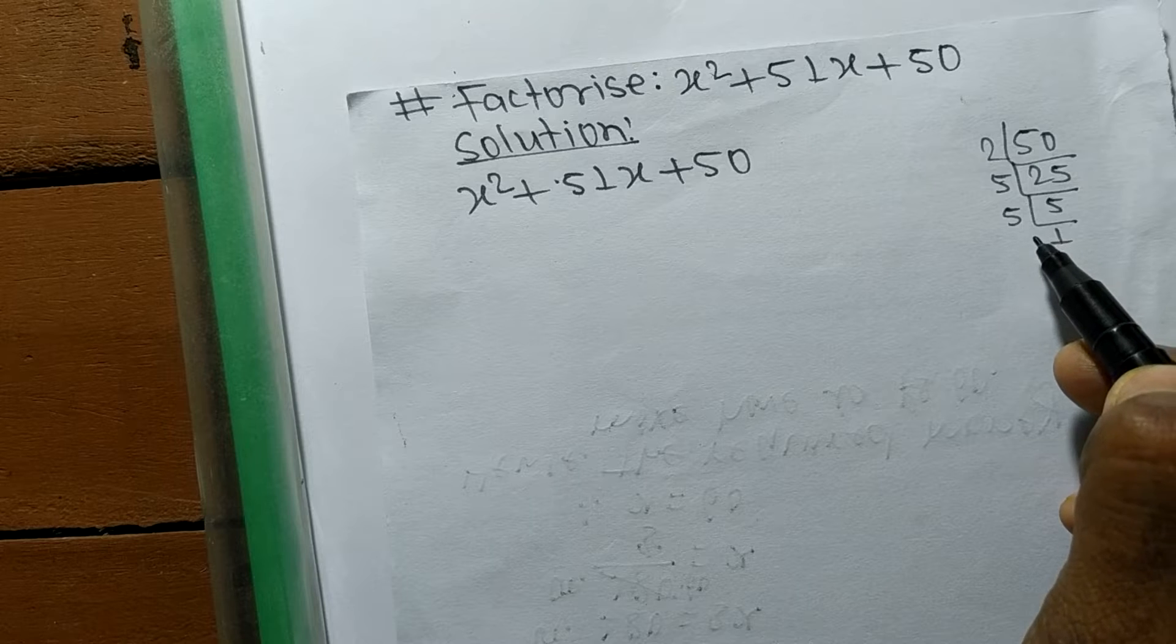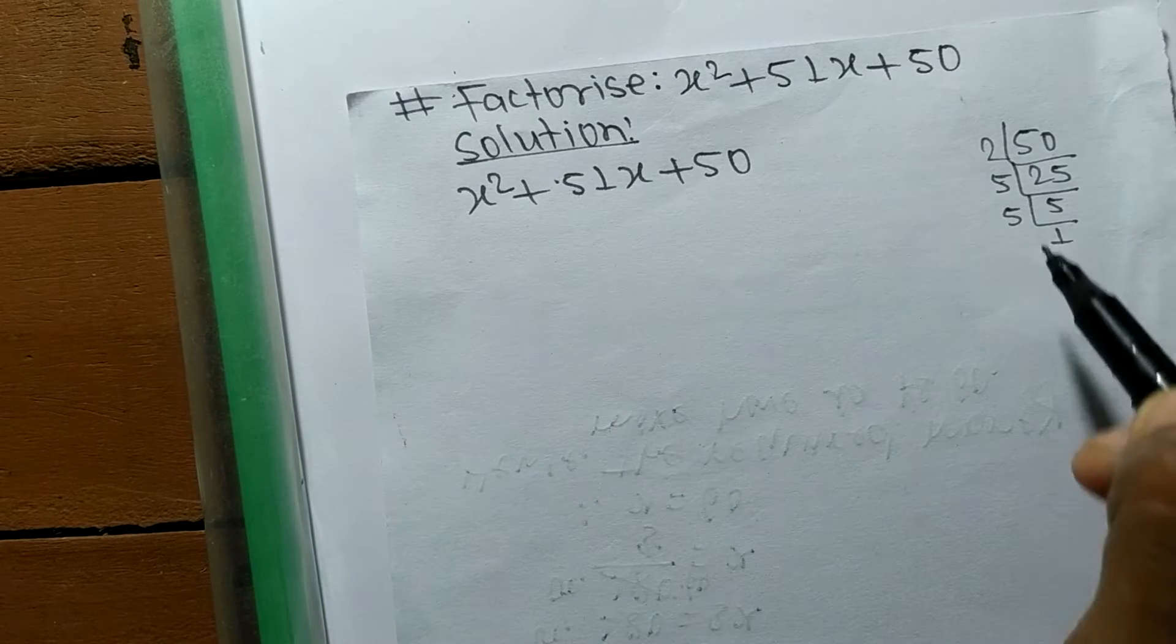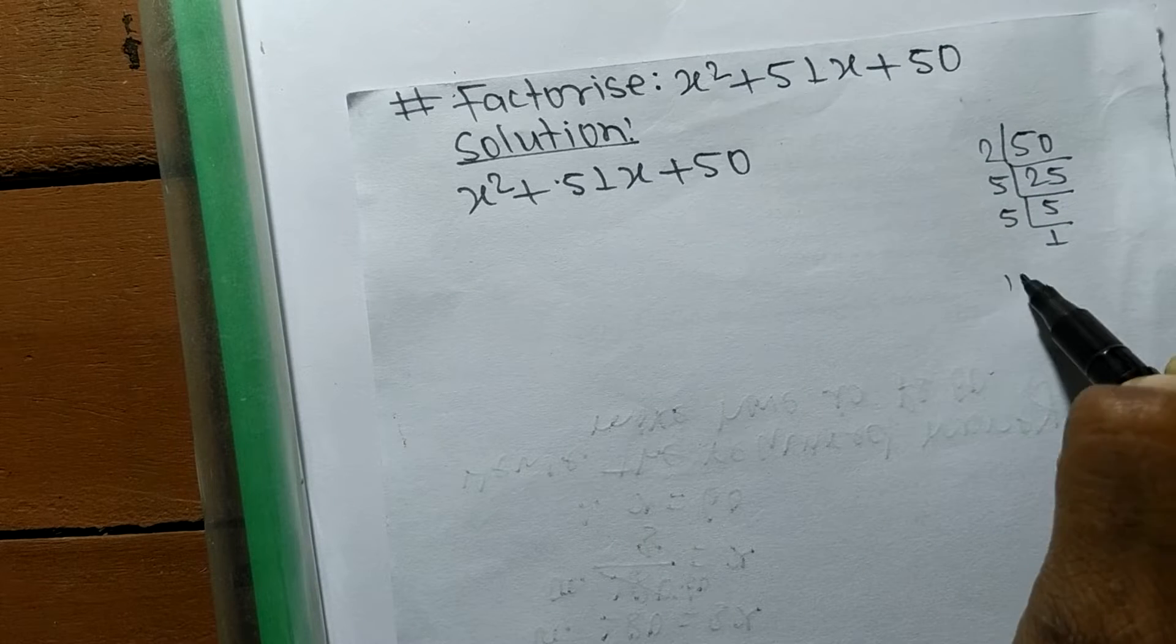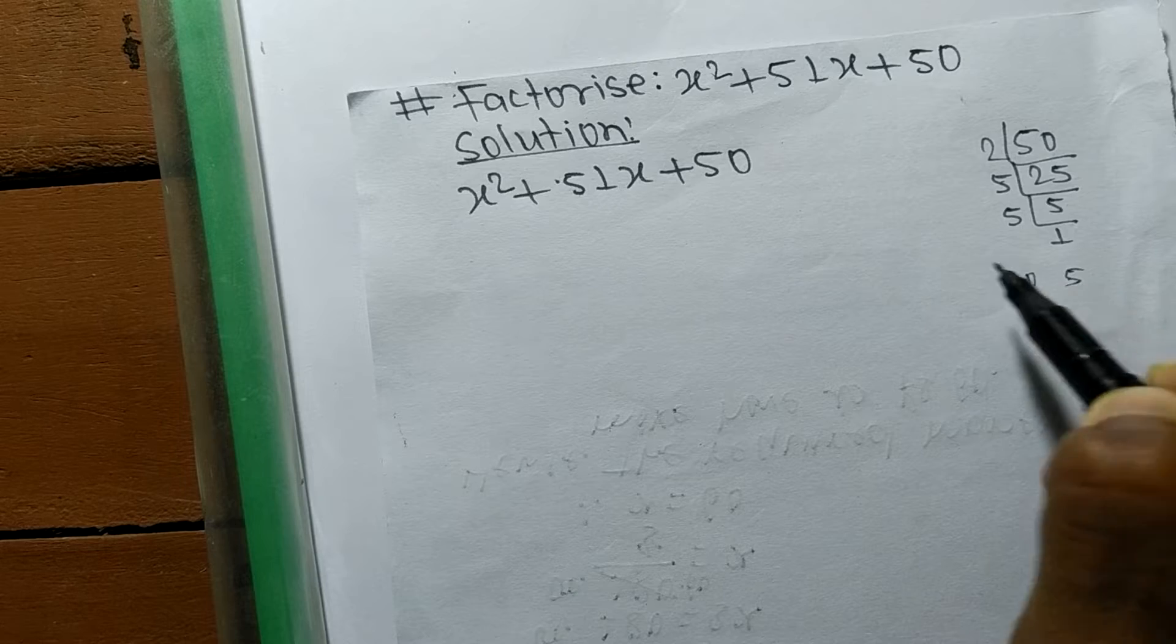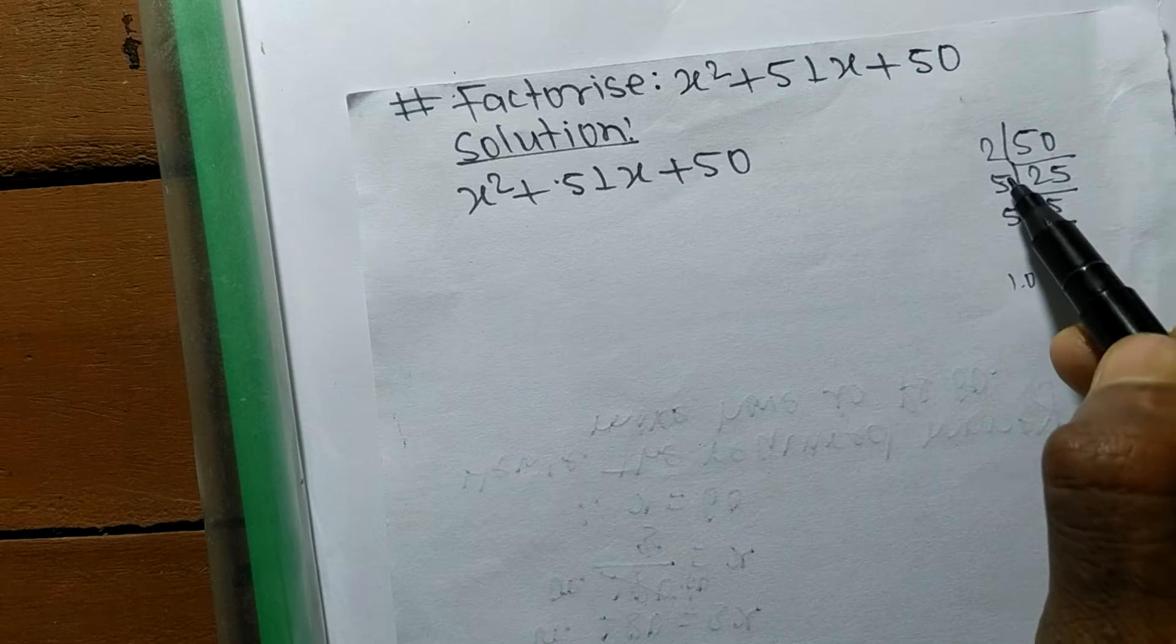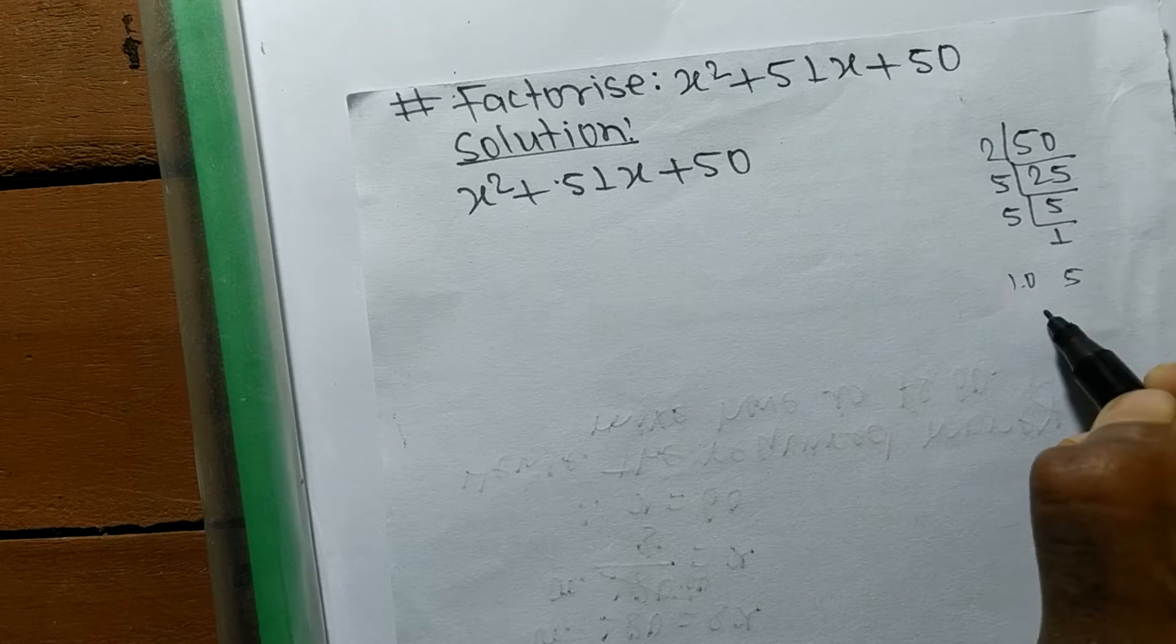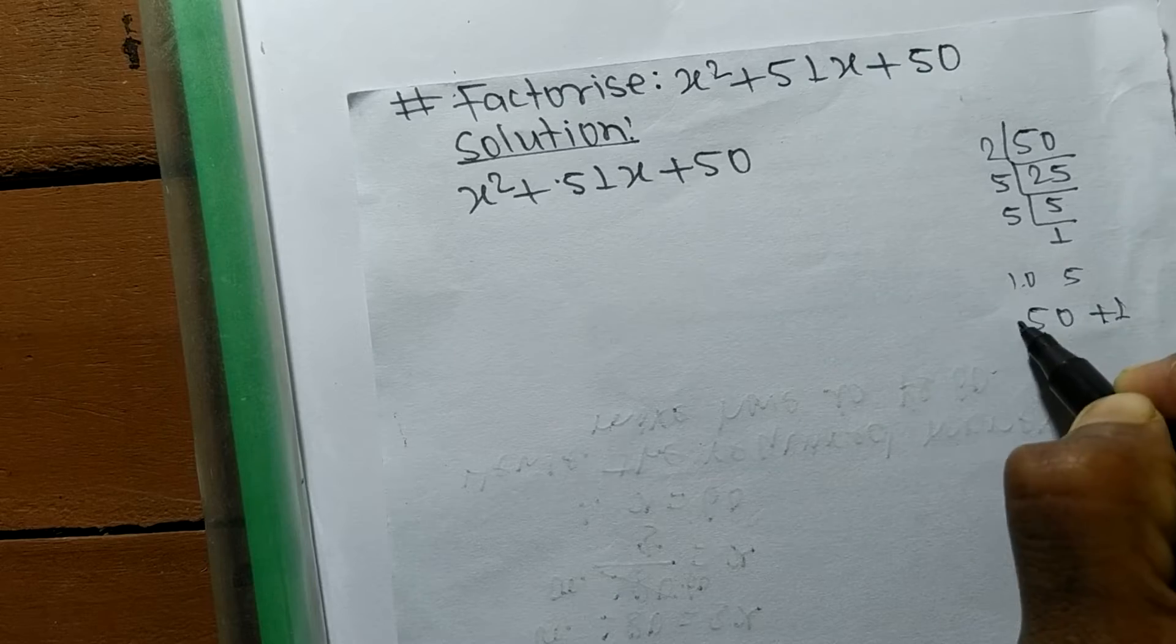we have to find numbers which by multiplying and adding give us 51. So 2 times 5 equals 10, 10 times 5 equals 50. If we take 50 and 1, then 50 plus 1 equals 51.